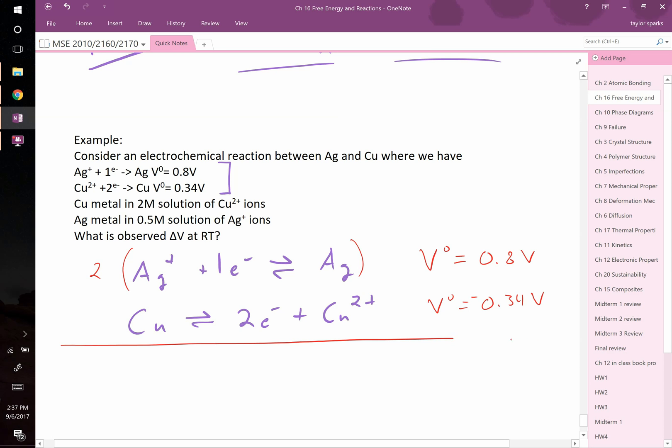Now, we can combine these two equations. And we're left with 2 silver plus ions plus 2 electrons plus copper yields 2 electrons plus 2 silver ions, or silver metal, excuse me, plus copper 2 plus ion. The two electrons cancels out on both sides of the equation. And our delta V0 is just going to be the addition of those two terms together, which when I add them is equal to 0.46 volts.